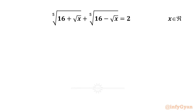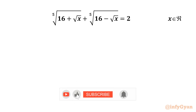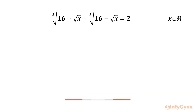Hello my dear friends, welcome back to Infigyan. In this video, we are going to solve one very interesting and challenging radical equation problem for the real values of x. Our equation is: the 5th root of (16 plus square root of x) plus the 5th root of (16 minus square root of x) equals 2.